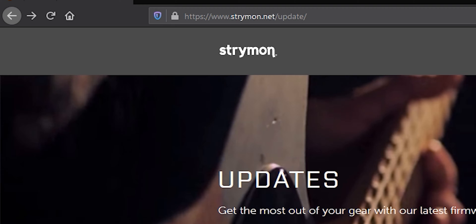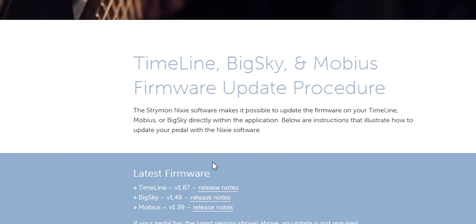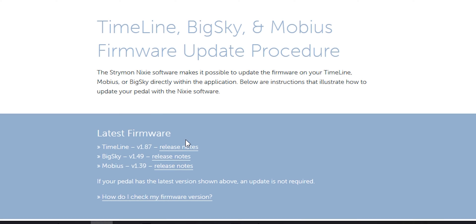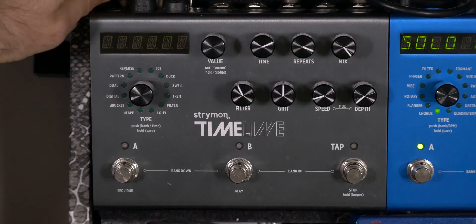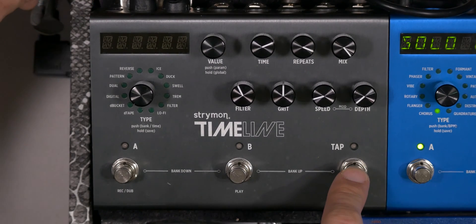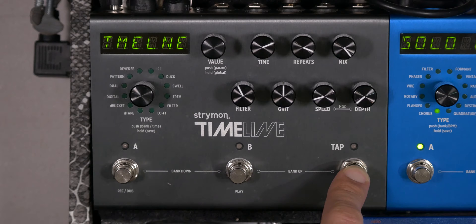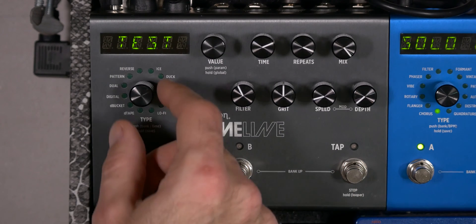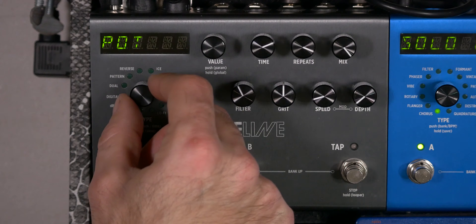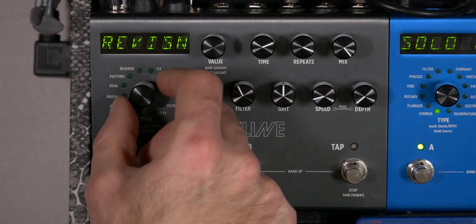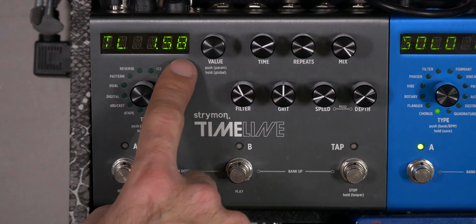First thing you want to do is go to the strymon.net/update website — I'll have a link below. One of the first things you see is what the latest firmware is. The latest firmware for the Timeline is 1.87. To check your current version, unplug your Timeline, hold down the tap button, power it back on. Wait for it to say 'Timeline' and then 'test,' let go of the tap button, use the type dial to turn to revision, tap the type dial in and it'll show you the revision. I'm on 1.58 and I should be on 1.87.